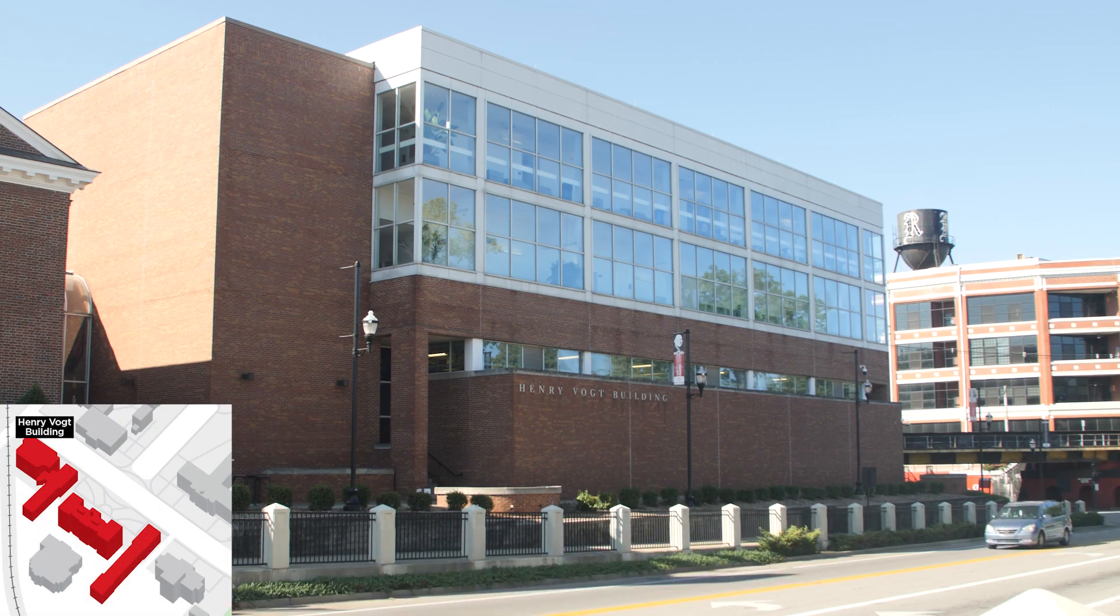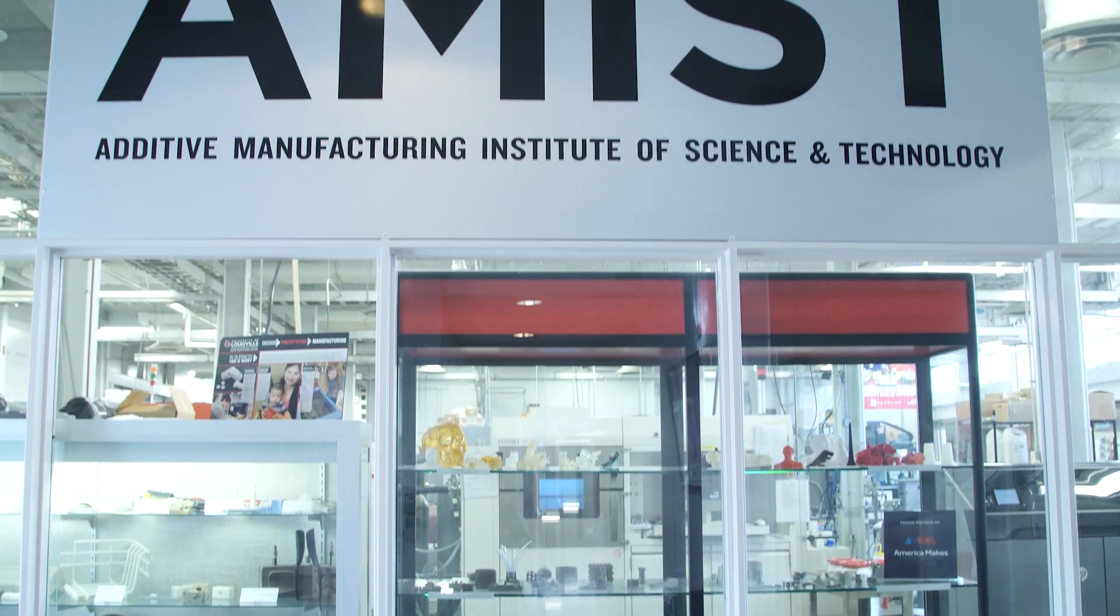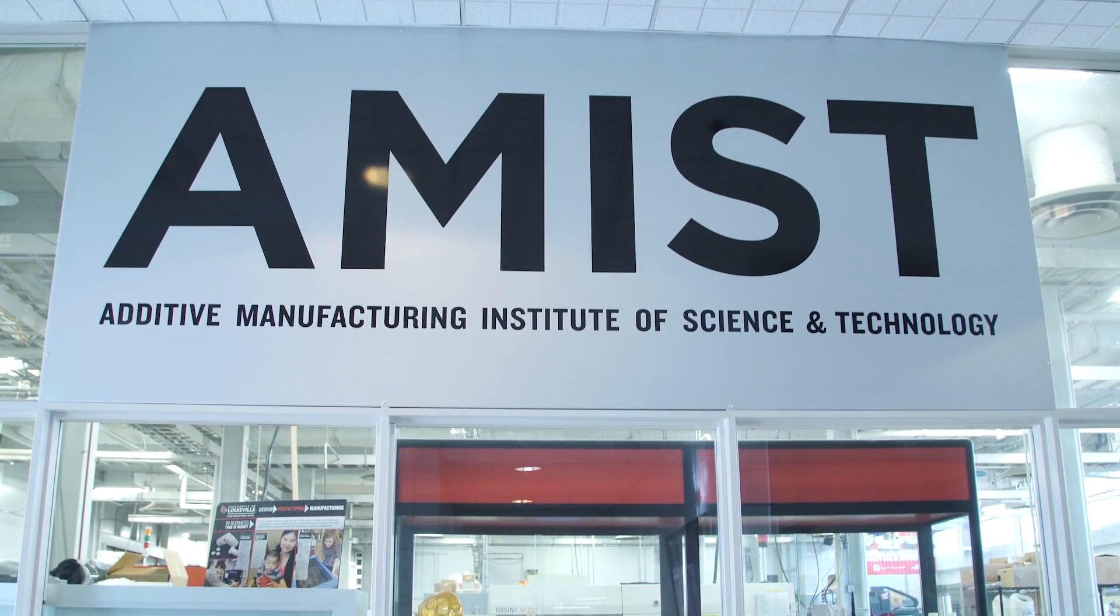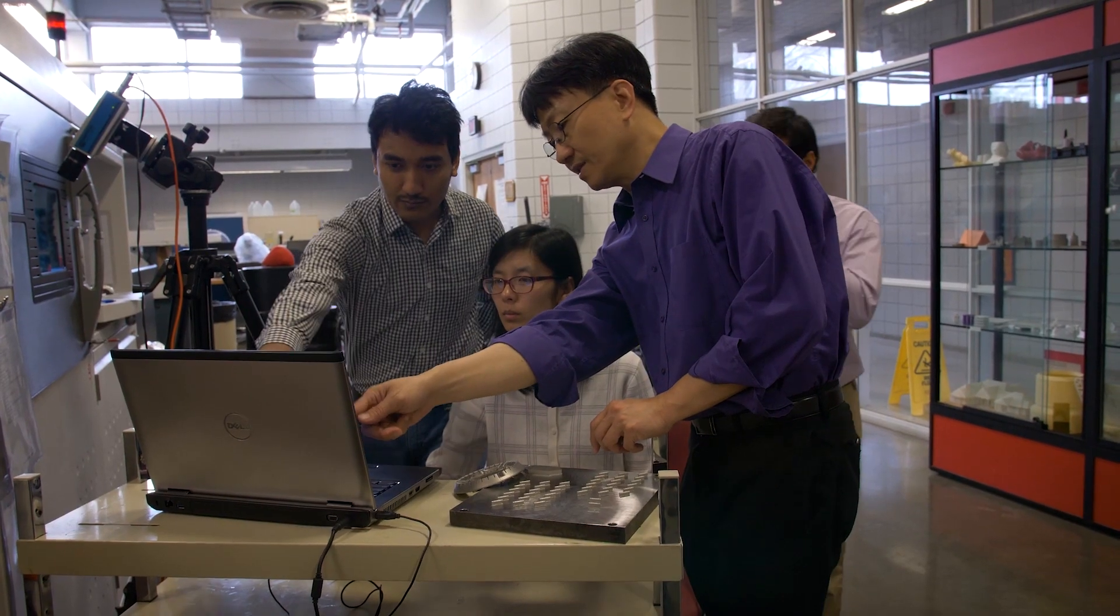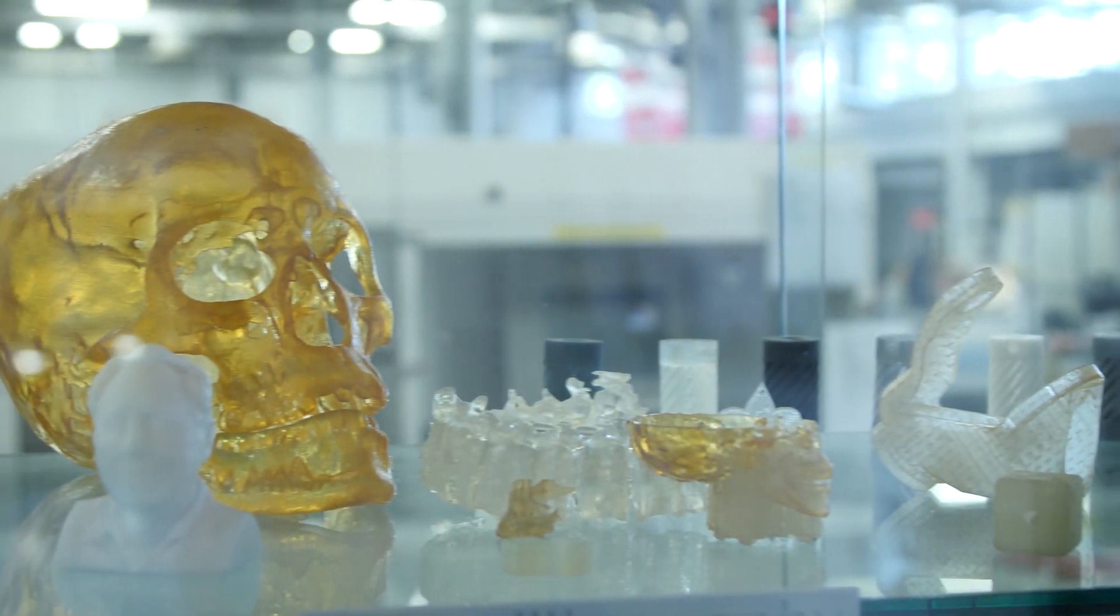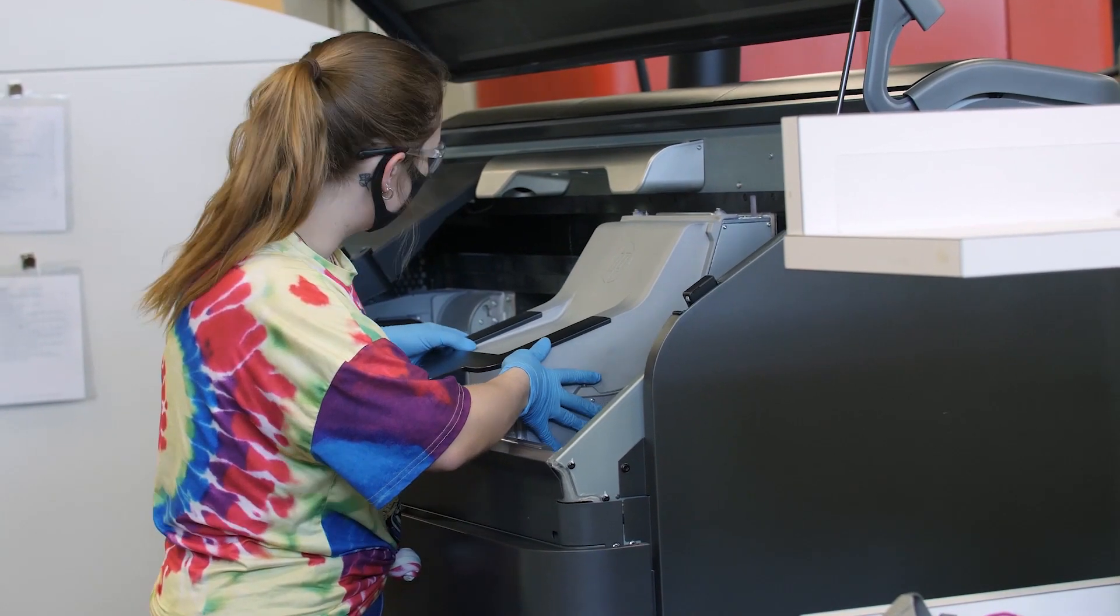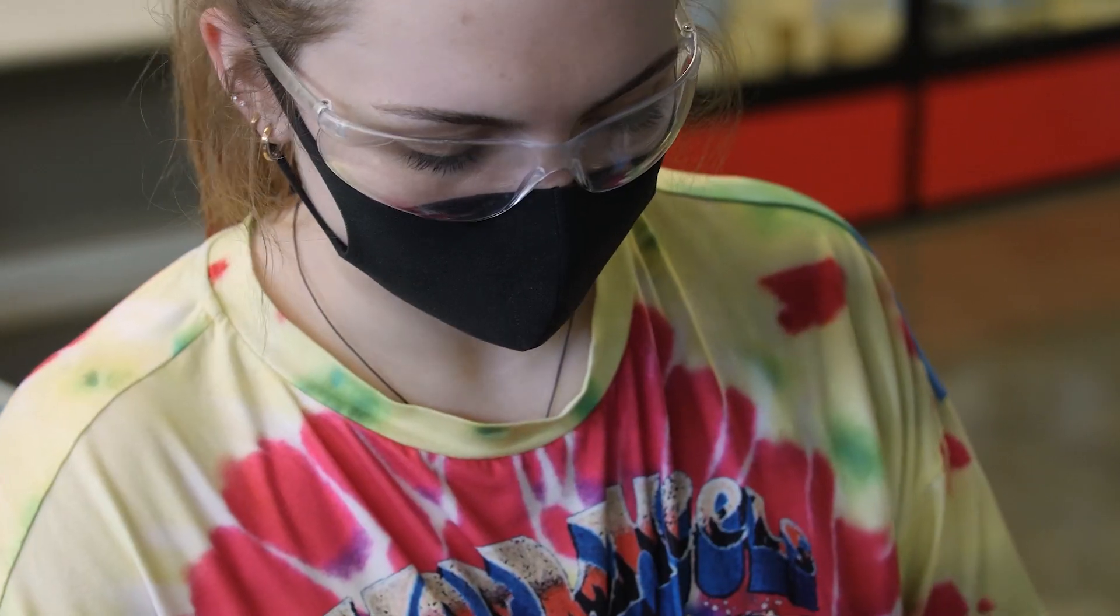If 3D printing is what you like, the Henry Vogt building is for you. In this building, we have the Amist core facility. Amist stands for the Additive Manufacturing Institute of Science and Technology. This institute focuses all of our 3D printing research. Many of our mechanical students choose to go to the Amist core facility for both research and co-op work.